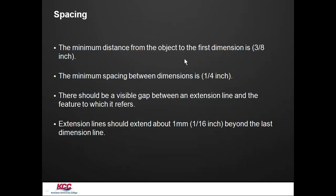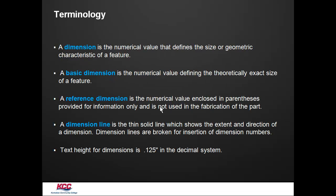The spacing should be at least three-eighths of an inch from the first item to the dimension. Minimum spacing after that should be a quarter-inch. There should be a visible gap to the first extension line. Typically, that's at least a sixteenth of an inch. An extension line should at least extend past the dimension line at least a sixteenth of an inch. Many people use an eighth inch. Here are some of our basic terminologies.